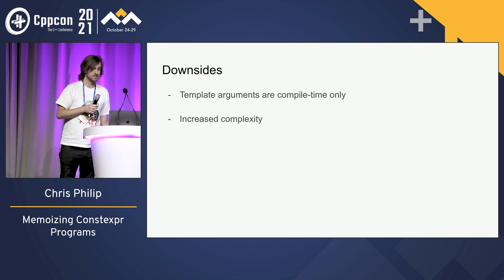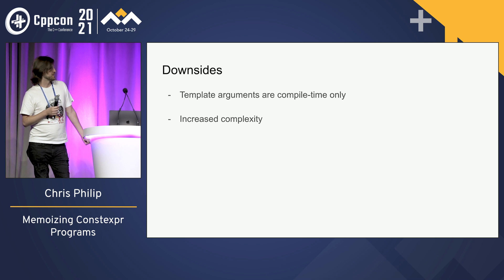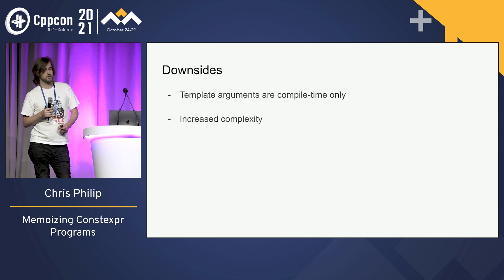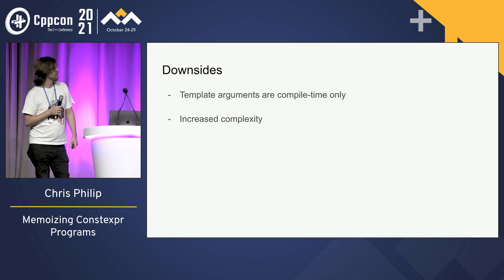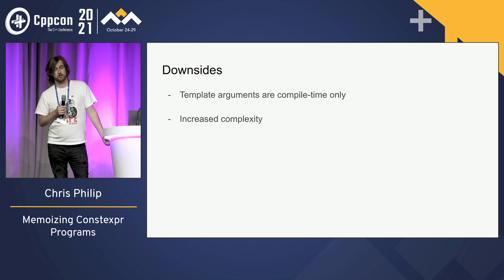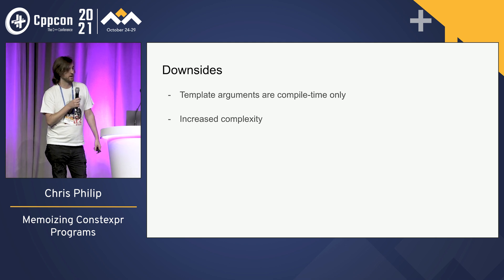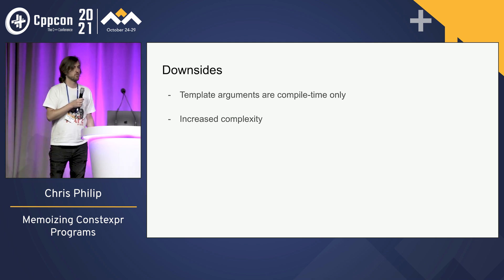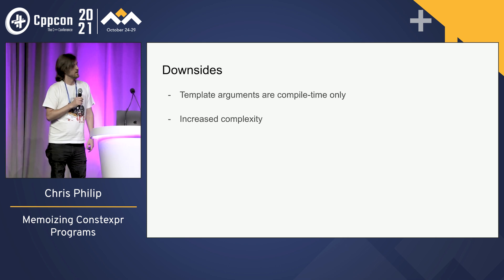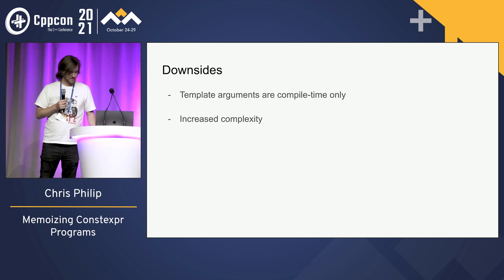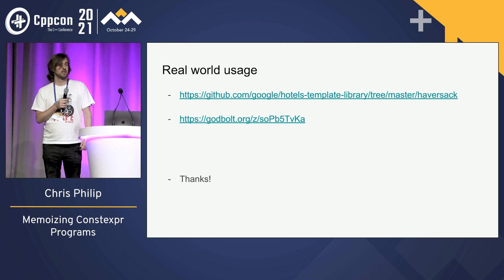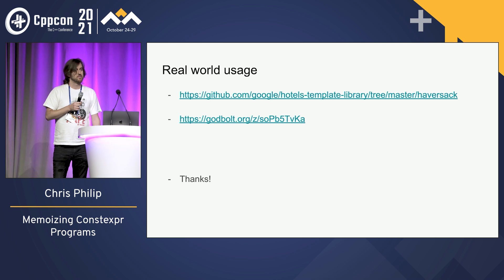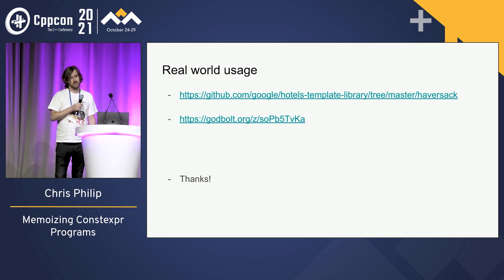Unfortunately, there are a couple of downsides. These template arguments are compile-time only, so you can't actually use this constexpr function at both runtime and compile time. And it adds a bit more complexity since we're not just writing traditional functions anymore — we have to have this indirection in our dispatch. But we use this in a library I wrote called Haversack, which does a lot of template metaprogramming and it allows our production code to actually compile.